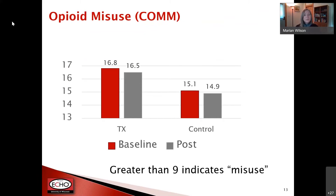The opioid misuse scale we used, the COM, indicates misuse at a score greater than nine. Across the eight-week period, all participants were measuring in the misuse category — 14 to 16 on average. That wasn't really surprising, as the COM wasn't really meant to be used in an opioid use disorder population — it's generally used in a chronic pain population, so that's something to consider.